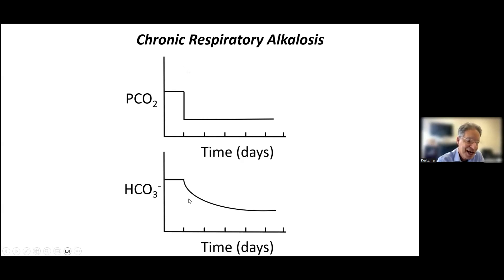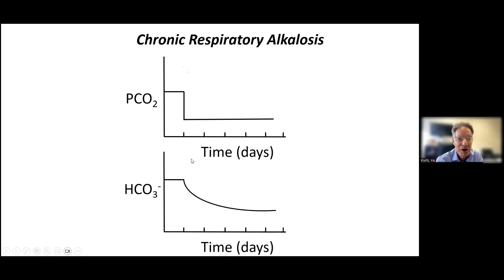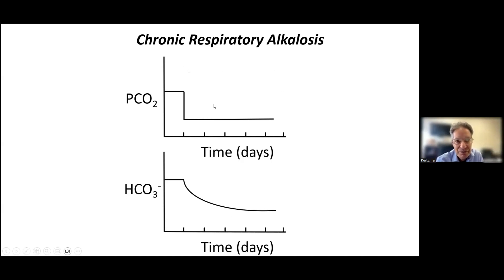Why the bicarbonate continues to fall with the kidney is complicated — there are changes in net acid excretion and some bicarbonate excretion, and the mechanism differs between humans and dogs. The point is that for every 10 fall in PCO2, bicarbonate falls by 5 chronically — the rule is 2:1. Whereas if both PCO2 and bicarbonate fell equally — about 1:1 — that would be compensated metabolic acidosis. You can recognize chronic respiratory alkalosis right away by the 2:1 ratio.